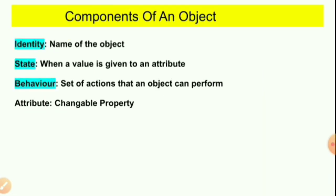What are the components of an object? We mainly have three components: identity, state, and behavior. Attribute is also listed but it is related to state and is not independent. So remember: three components — identity, state, and behavior.